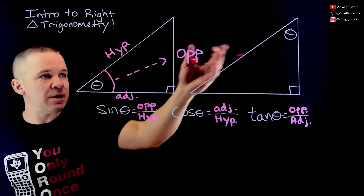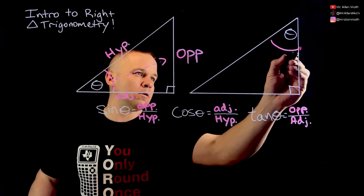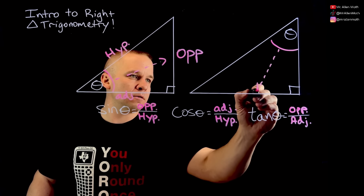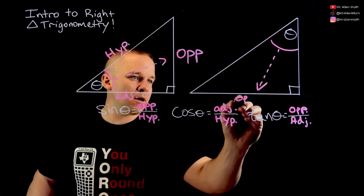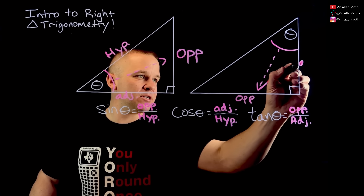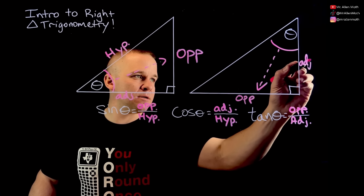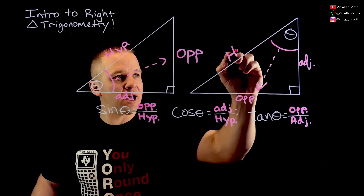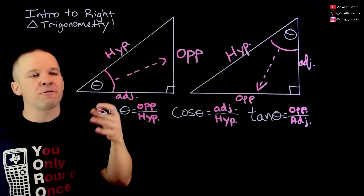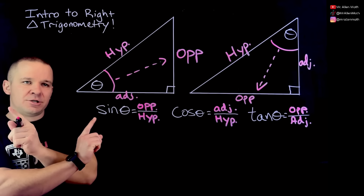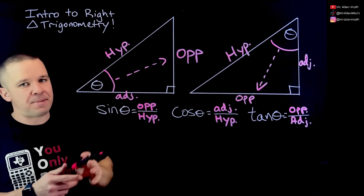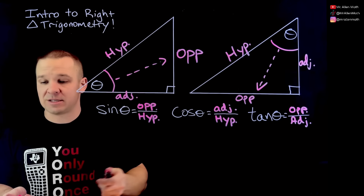The same would go over here with the other triangle, except now across from this angle, this is my opposite side, this is my adjacent, and this one's still my hypotenuse. So if I'm looking at it from a different angle, the opposite and the adjacent flip-flop, but the hypotenuse remains the same.